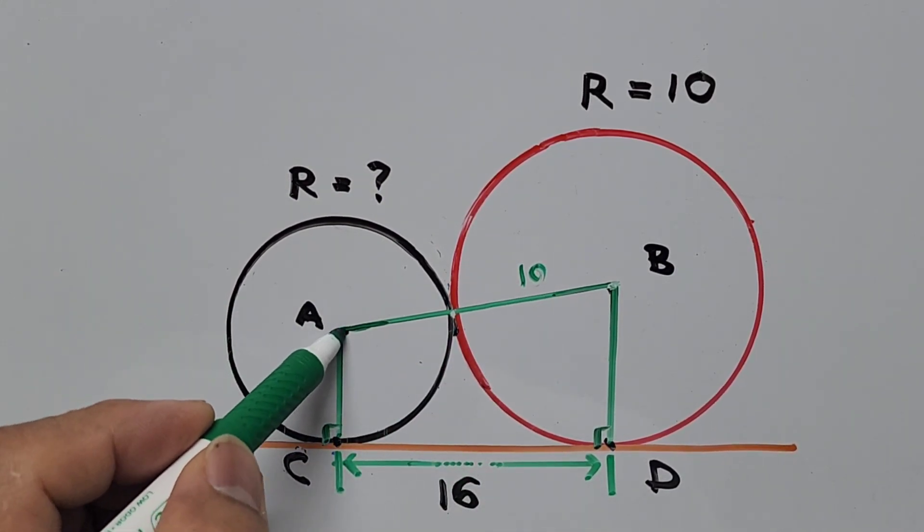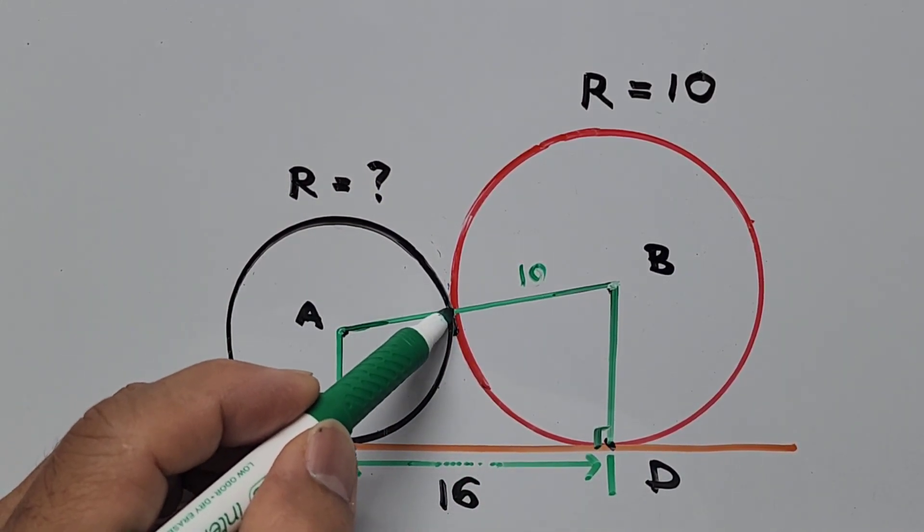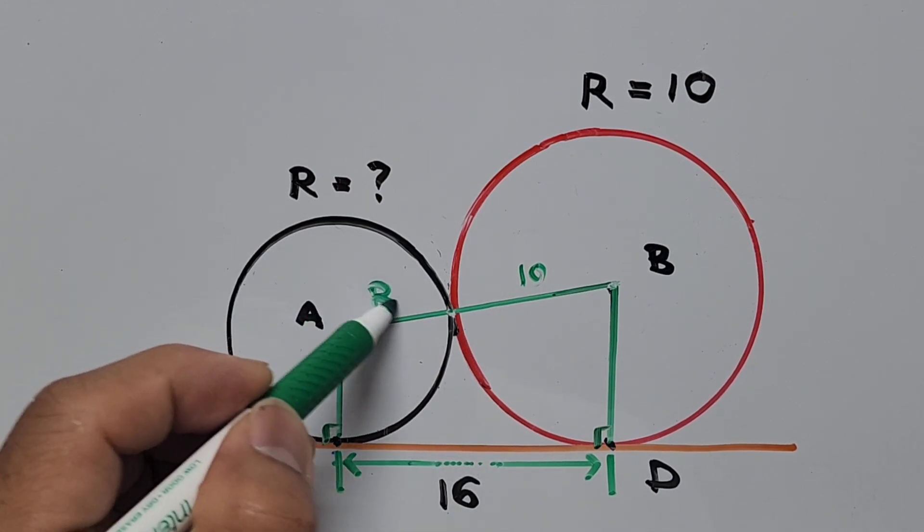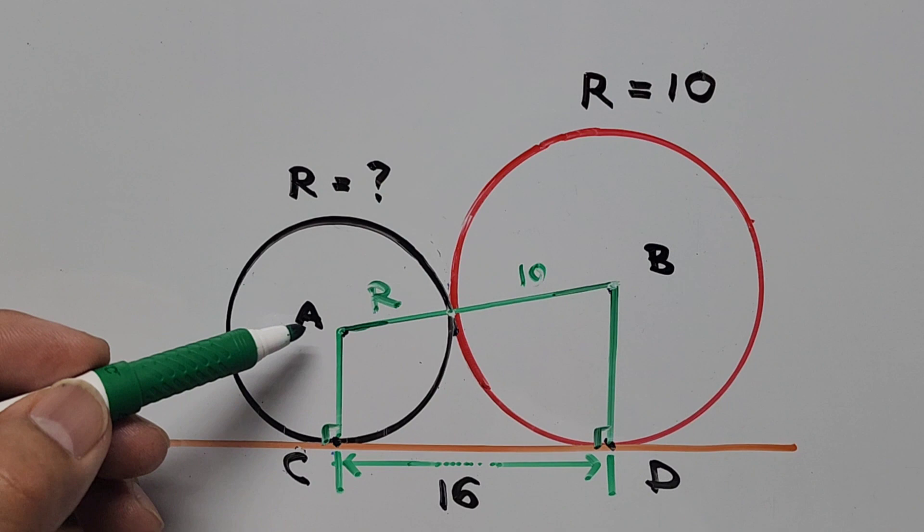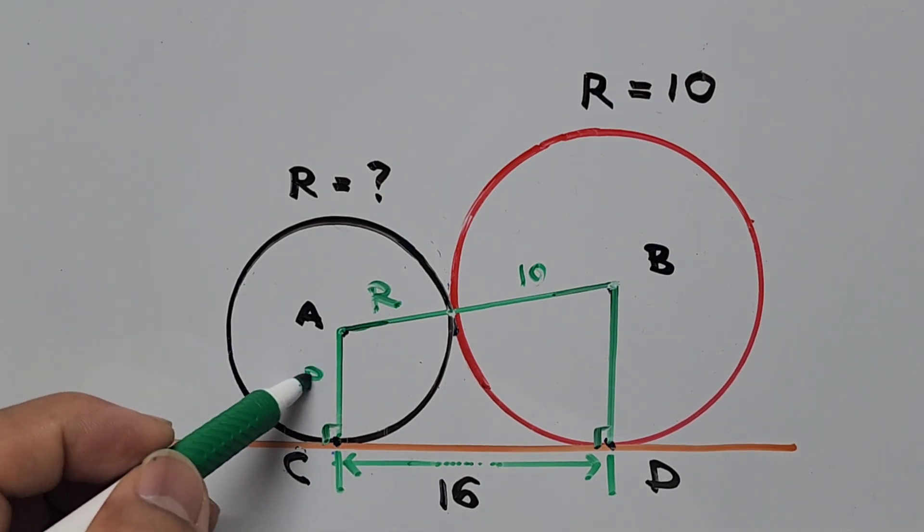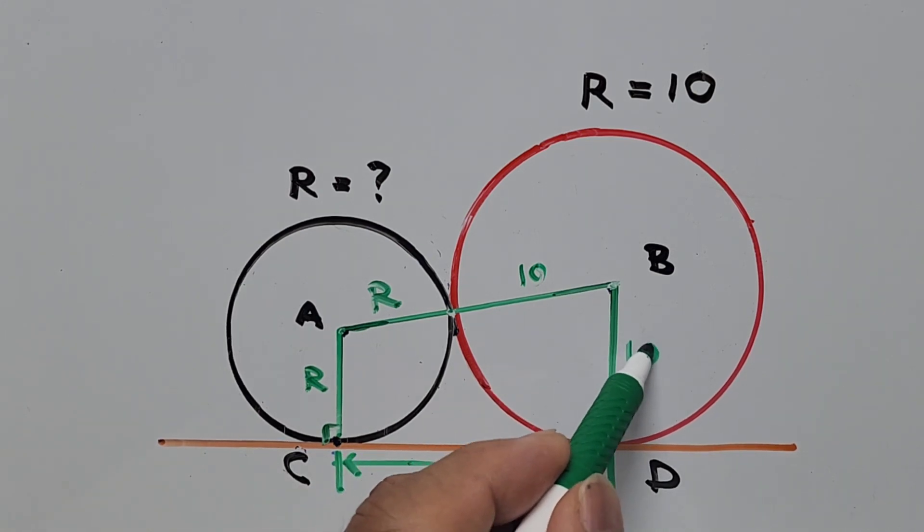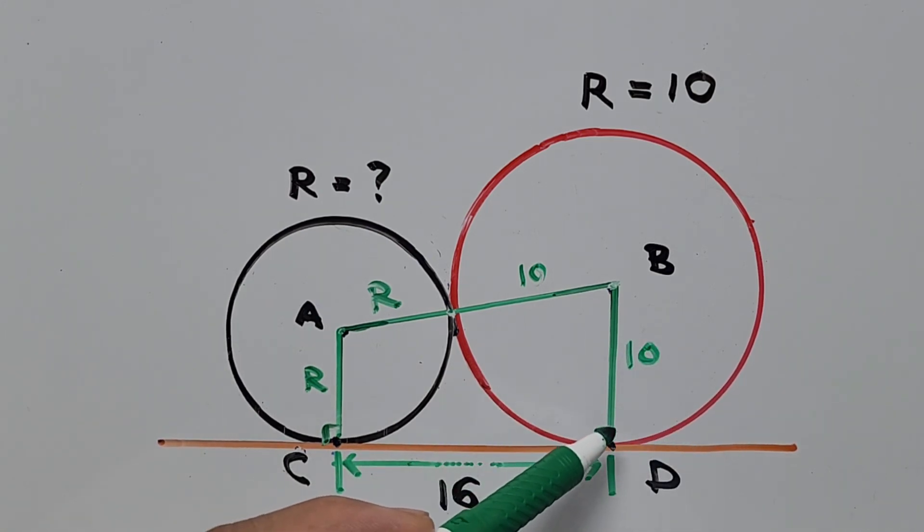From the center of the smaller circle to the point of tangency between the two circles is R. Segment AC is the same R, radius of the smaller circle. Segment BD is the same 10 units, that's the radius of the bigger circle.